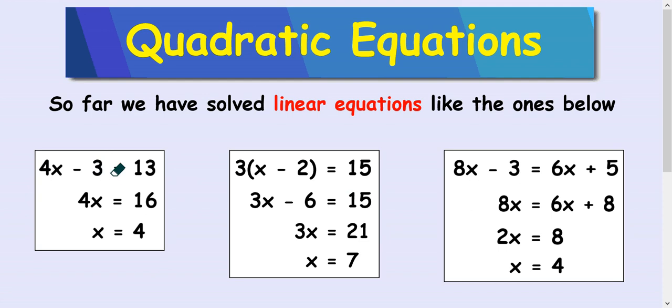Like this one, first one you would add three to both sides, then divide by four. You would multiply the brackets out, then you would add six to both sides, and then divide by three, and so on.